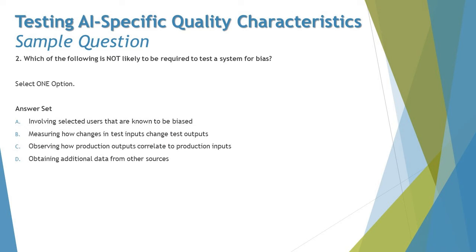The next question asks: which of the following is NOT likely to be required to test a system for bias? Pay close attention to the word 'not' in exam questions — it turns the meaning around completely. So we are looking for what we do NOT need when testing a system for bias.